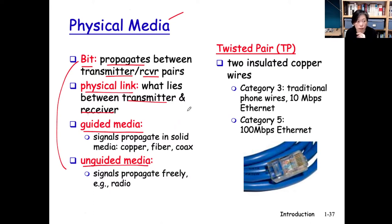Now there are four kinds of physical medias we'll be talking about. First is twisted pair, and this is one of the commonly used cables for Ethernet.